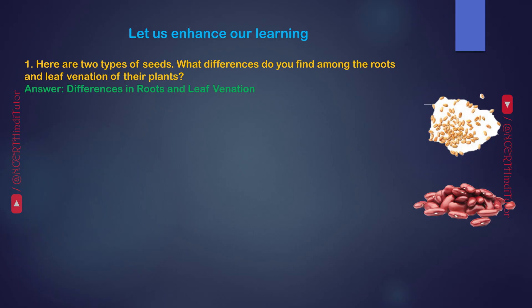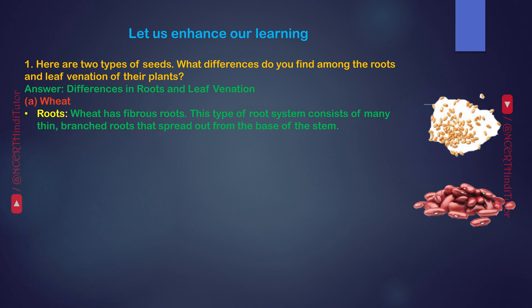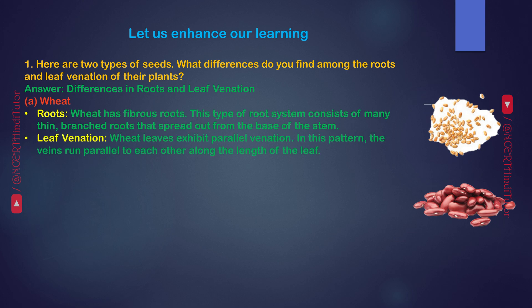Answer. Differences in roots and leaf venation. A. Wheat. Roots: Wheat has fibrous roots. This type of root system consists of many thin, branched roots that spread out from the base of the stem. Leaf venation: Wheat leaves exhibit parallel venation. In this pattern, the veins run parallel to each other along the length of the leaf.